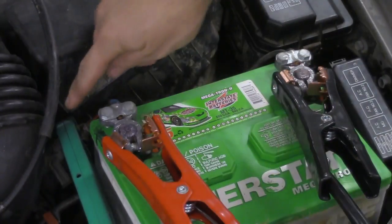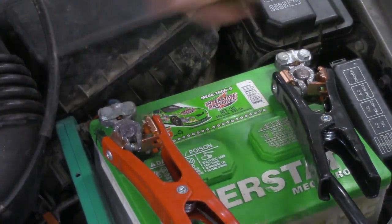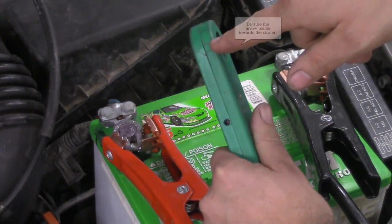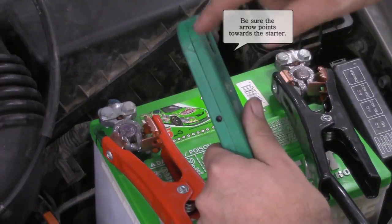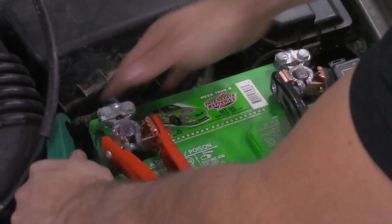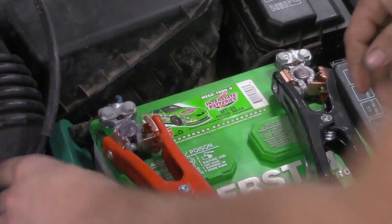What you'll also notice is right here, there's a green arrow. There's an arrow located right here. This is going to go around the large wire. Arrow points away from the battery towards the starter motor.